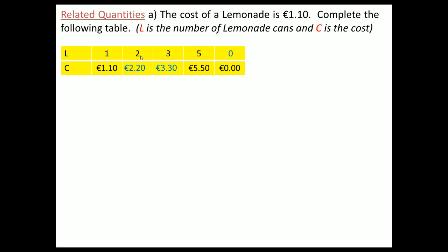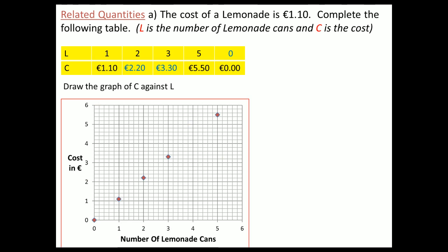No cans cost nothing, and the idea is that the price of the can of lemonade doesn't change no matter how many I buy. So if I buy 20 cans it's 20 times one euro ten. I could draw that graph with cost in euros on the left-hand side and number of lemonade cans on the bottom — I'd plot those points and get a straight line graph.